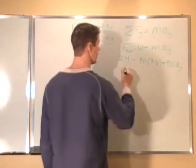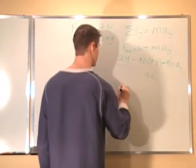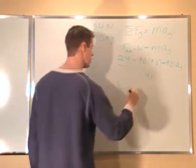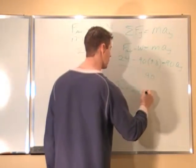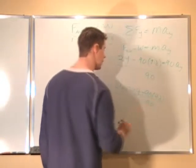So we just divide by 90. So we have acceleration y equals 24 minus 90 times 9.8, all divided by 90.